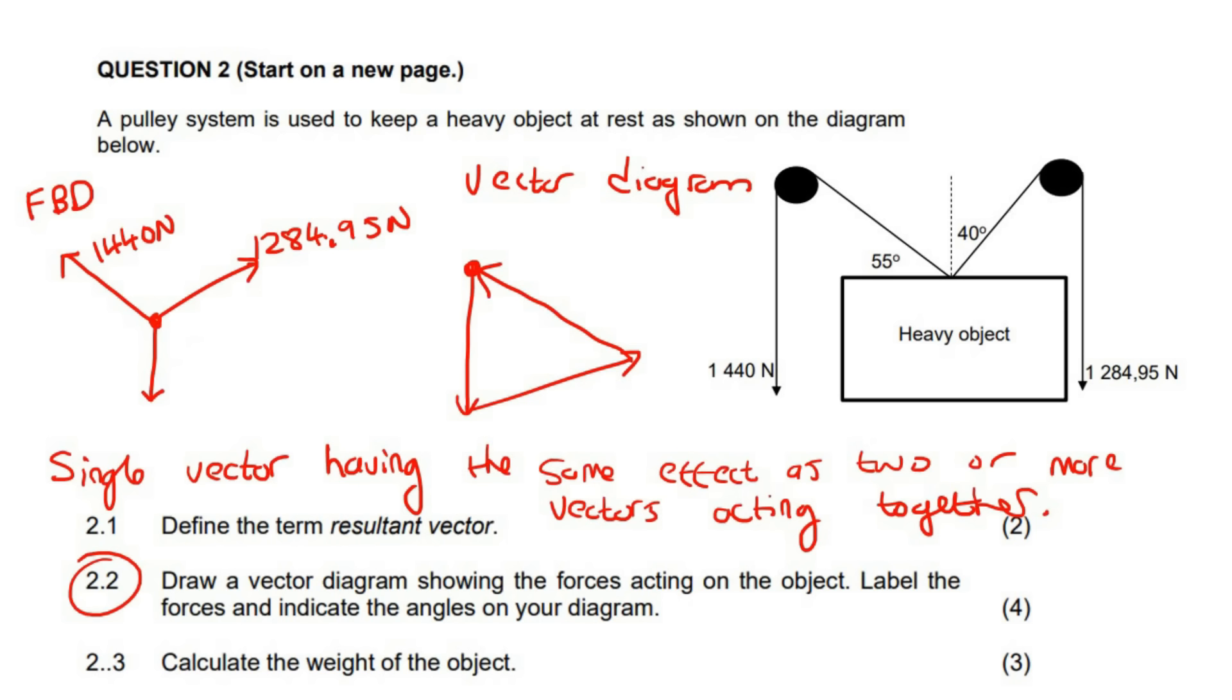Which one is this? This one's 1,284.95 newtons. Do not get those numbers wrong. I'm just joking. I don't know why they were so precise with their numbers. And then 1,440 newtons. And then this is just the heavy object, which you would have to label. So over here, I should have labeled this as W or you can label it as FG. I usually use FG, but you can also use W.